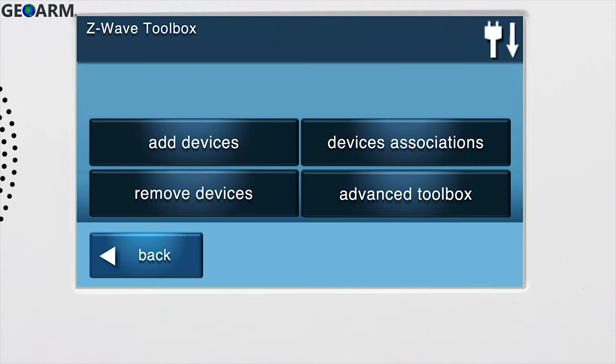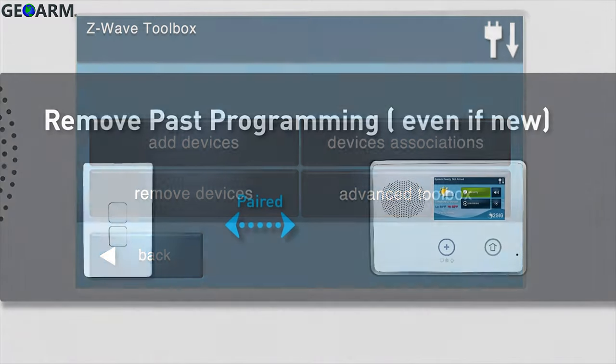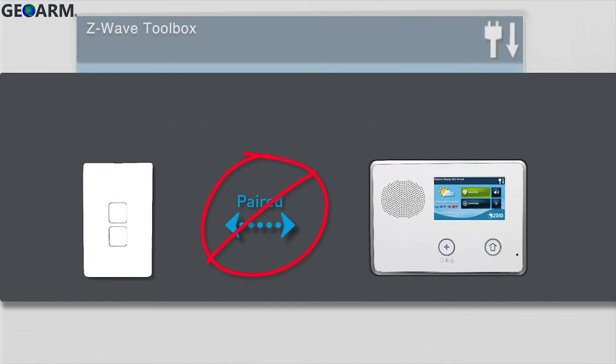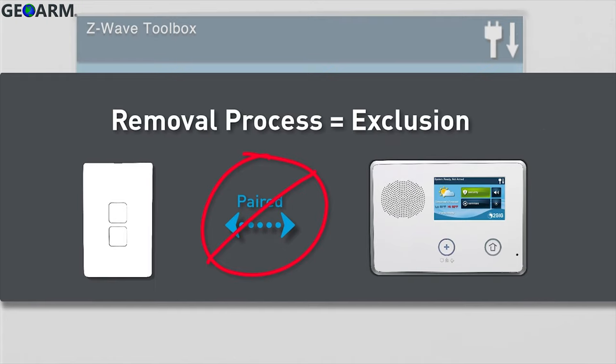You are now in the Z-Wave Toolbox. Z-Wave devices may need to have past programming removed before they can be added to a panel, even if they are new. We do this by performing the removal process, which is also known as exclusion.